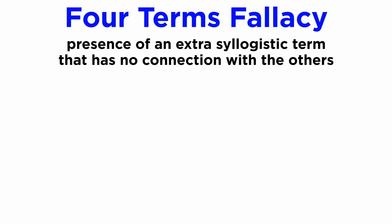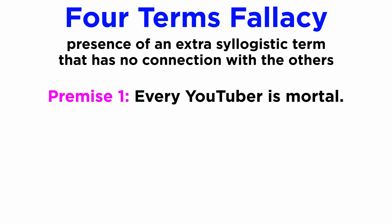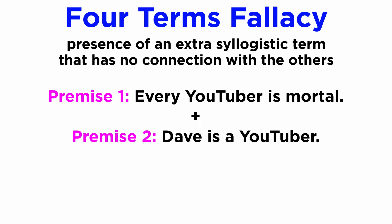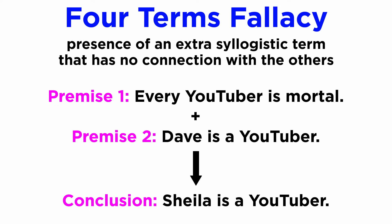Among formal fallacies, there are simple ones such as four terms, where instead of our usual three terms in a syllogism, there is an extra one which lacks logical connection with the others. An example would be: every YouTuber is mortal, where there are two terms; Dave is a YouTuber, where we introduce a new one; and thus Sheila is a YouTuber, where a fourth one, Sheila, is introduced, which is not connected with any of the previous premises.